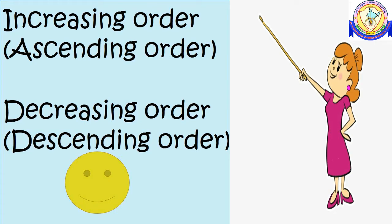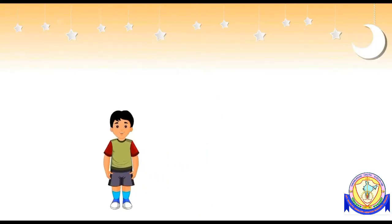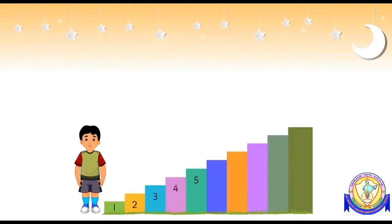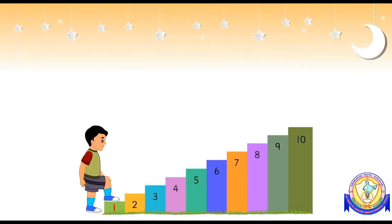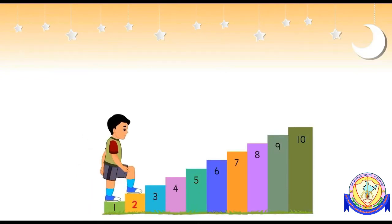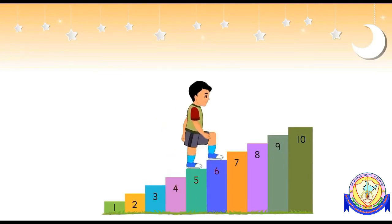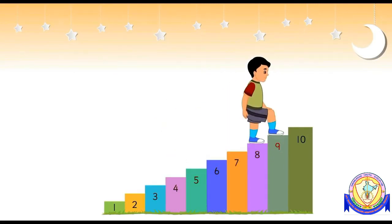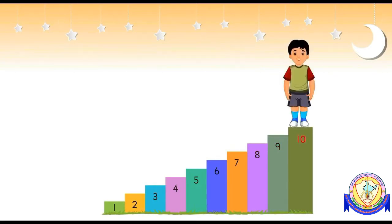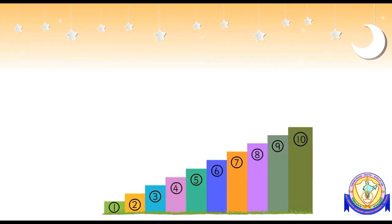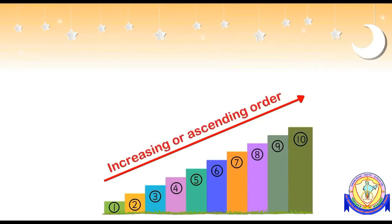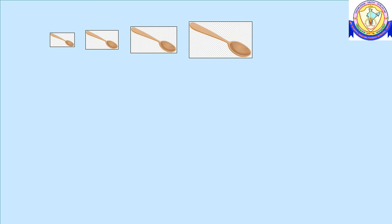Ascending and descending order. Let us meet Rahul — he has to climb ten steps numbered one to ten. Rahul starts from step number one and climbs to step two, then three, four, five, six, seven, eight, nine, and finally step ten. As he climbs up, he is ascending, moving to a greater number each time. When numbers are arranged from the smallest to the greatest, they are in ascending order, or increasing order.